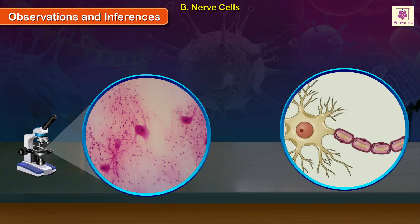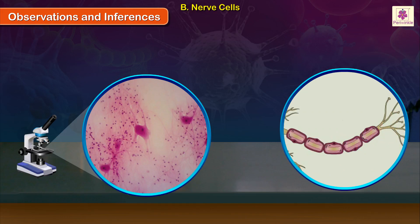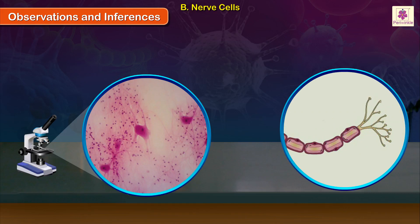The longest projection of the cytone is called an axon. The axon ends in a large number of terminal branches, each having a knob-like structure called a synaptic knob or bulb.